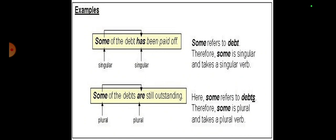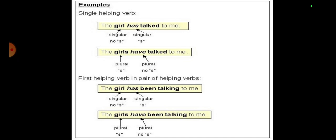Next, some of the debt has been paid off. Sum of the debt is a singular subject, remember. If it's sum of the debts, then it's plural and we'll use are. Is is used for singular persons and are for plurals. Similarly, has is used for singulars and have for plurals. The girl has talked to me, this is singular, that's why has talked. If it's girls, then it will be have talked. In perfect continuous tense, the girl has been talking, the girls have been talking.